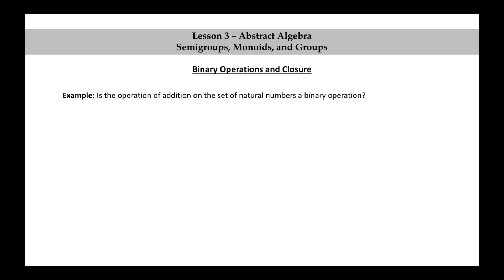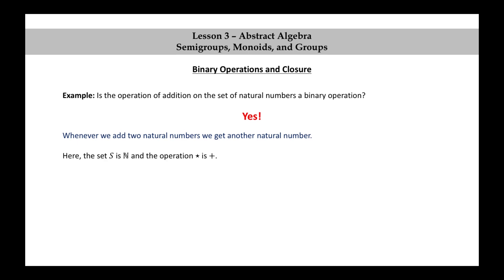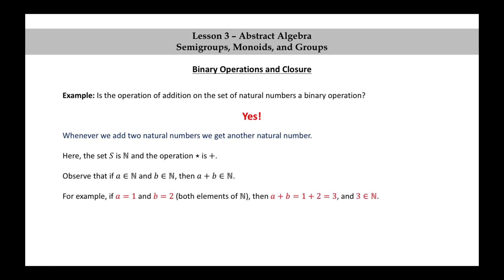Is the operation of addition on the set of natural numbers a binary operation? Yes, it is. Whenever we add two natural numbers, we get another natural number. Here, the set S is N and the operation star is plus. Observe that if a is a natural number and b is a natural number, then a plus b is also a natural number. For example, if a is 1 and b is 2, both elements of N, then a plus b is 1 plus 2, which is 3, and 3 is a natural number.